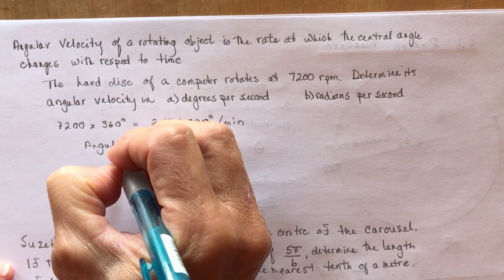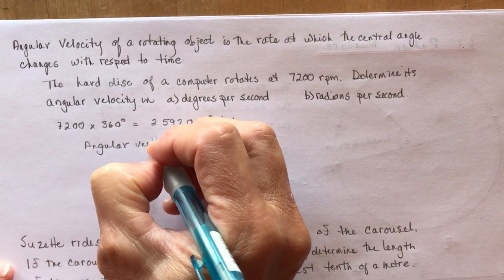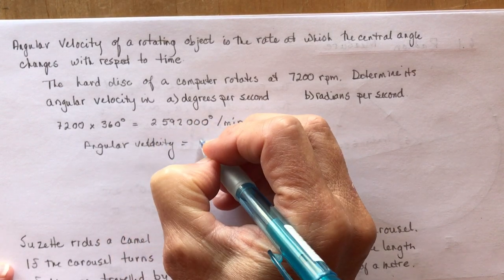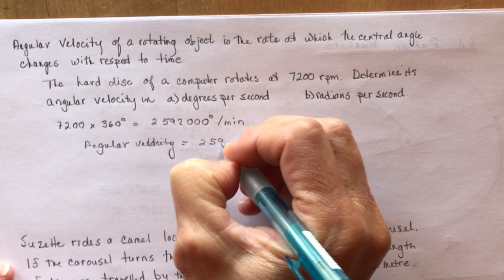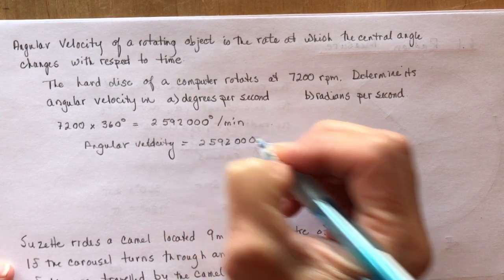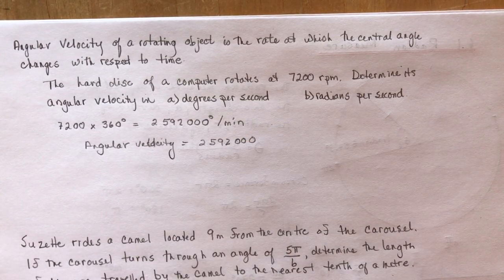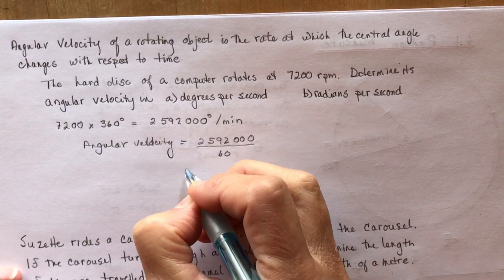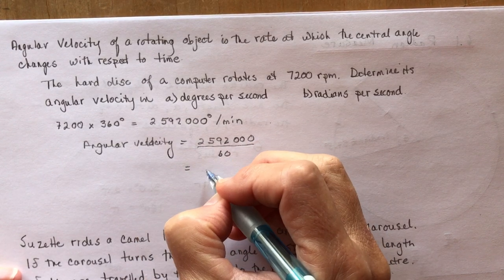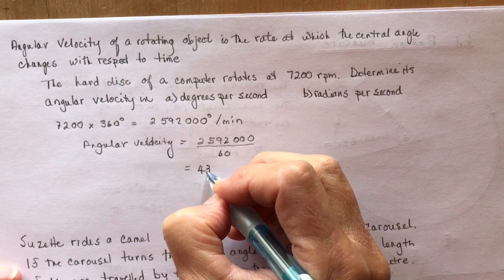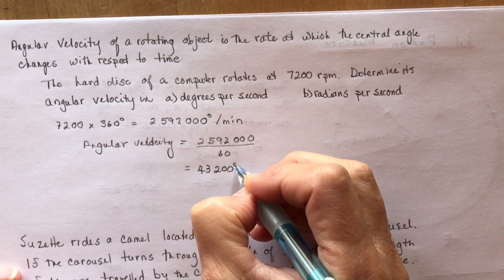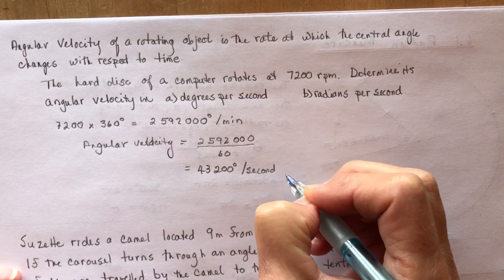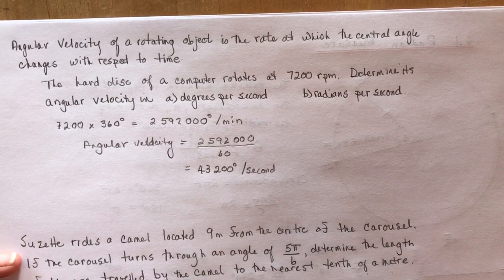Right now I have revolutions per minute, so 7200 revolutions per minute means I went around 360 degrees 7200 times. If I multiply that out I get 2,592,000 degrees per minute. But I want it in seconds, so the angular velocity is 2,592,000 divided by 60 to get it per second, which comes out to 43,200 degrees per second. Pretty fast, isn't it?